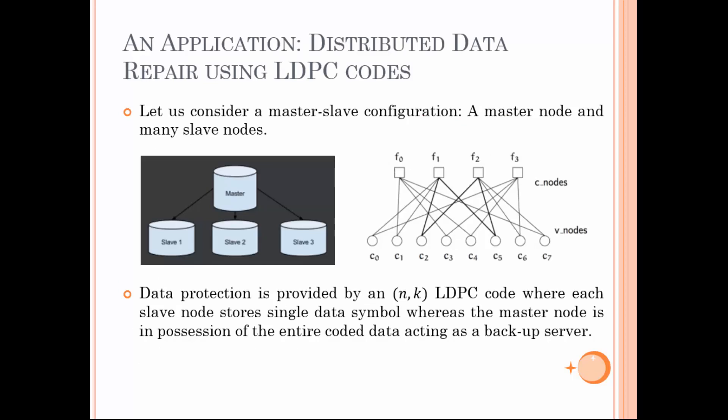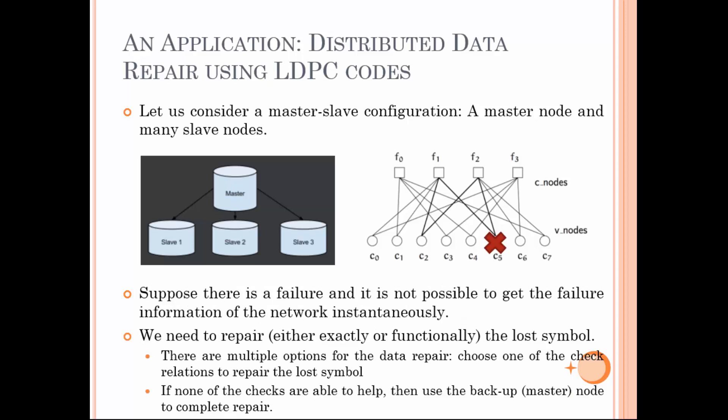In the last part of our study, we consider an application of cost of guessing. We consider a master-slave configuration in a distributed storage scenario and focus on the data repair process. There is a master node and many slave nodes — this configuration is also common in several networks. Data protection is provided by an (N,K) LDPC code, which is a sparse graph code, where each slave node stores a single data symbol, whereas the master node is in possession of the entire coded data, acting as a backup server. Now suppose there is a failure and it's not possible to get the failure information of the network instantaneously — which is usually the case in ultra-low latency applications. We need to repair either exactly or functionally the lost symbol to maintain the durability of the system. There are multiple options for the data repair: we can choose one of the sub-check relations to repair the lost symbol.